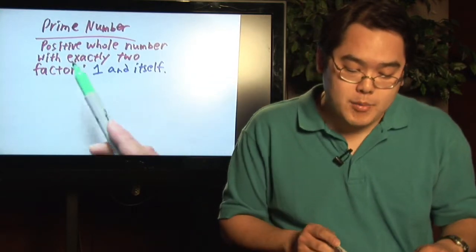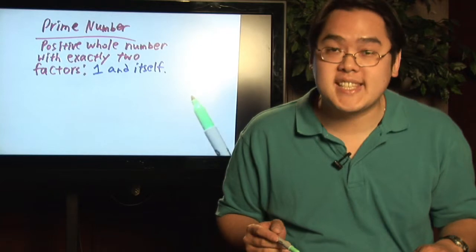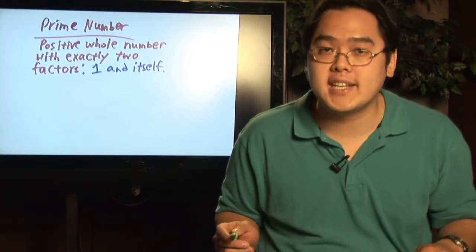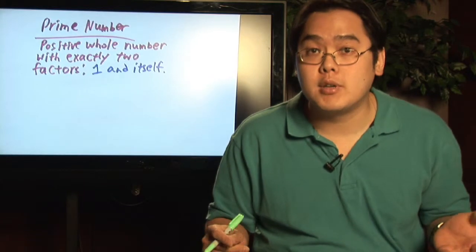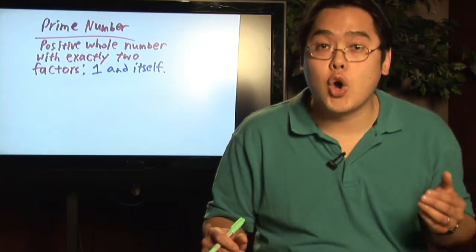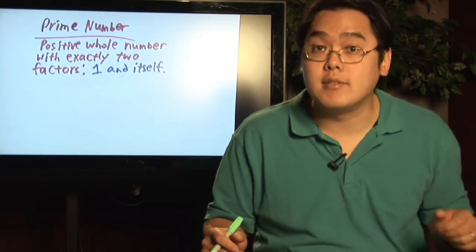Now, a prime number is a positive whole number with exactly two factors: one and itself. So basically, we're talking about any positive whole number that the only numbers that will go into it are going to be one and the number that's given.